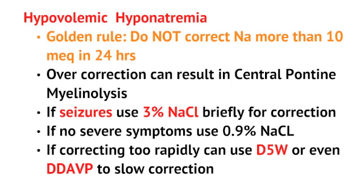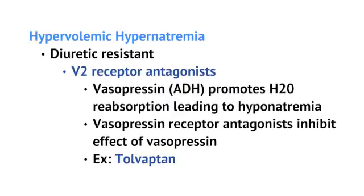For hypervolemic hyponatremia that is diuretic resistant, we use V2 receptor antagonists — medications that block the vasopressin receptor. By blocking the receptor, you prevent water from being reabsorbed by the kidneys, so sodium in the body isn't diluted out, and sodiums will normalize. An example of a V2 receptor antagonist is Tolvaptan, used in cirrhosis patients who are diuretic resistant. That was a brief review of hyponatremia.